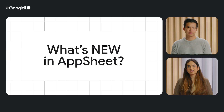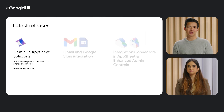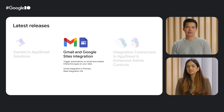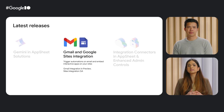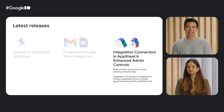AppSheet is continually evolving, and we are excited to highlight our latest launches designed to significantly enhance your app-building experience. We're particularly thrilled to introduce Gemini in AppSheet apps, which empowers app users to directly add data by extracting and summarizing information from photos and files. New workspace integrations enable you to trigger powerful automations from Gmail and seamlessly embed your apps within Google Sites. Integration connectors make it easy to integrate with other enterprise systems within your workflows. Finally, you'll have control over data and app usage with the introduction of our new user-passed license and enhanced AppSheet admin controls.